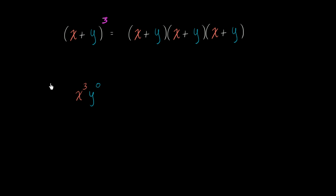And how many ways are there to construct that? How many ways are there, if we're picking from three things, how many ways can we choose exactly zero y's of not picking a y? Well, there's only one way to do that. There's only one possible way of doing that by not picking a y from each of them, or you could say by picking an x from each of them. So the coefficient right over here is one x to the third.